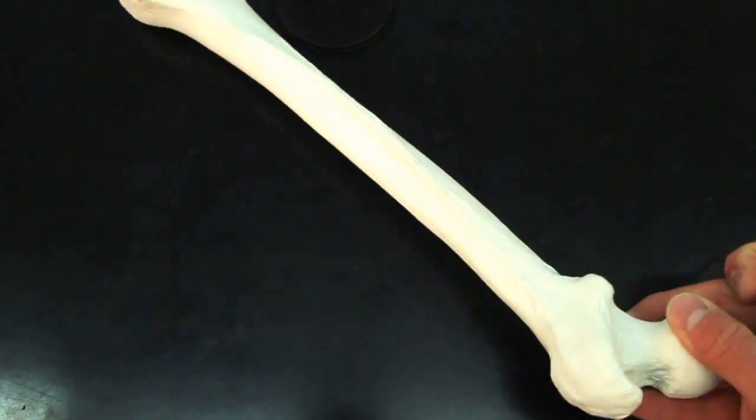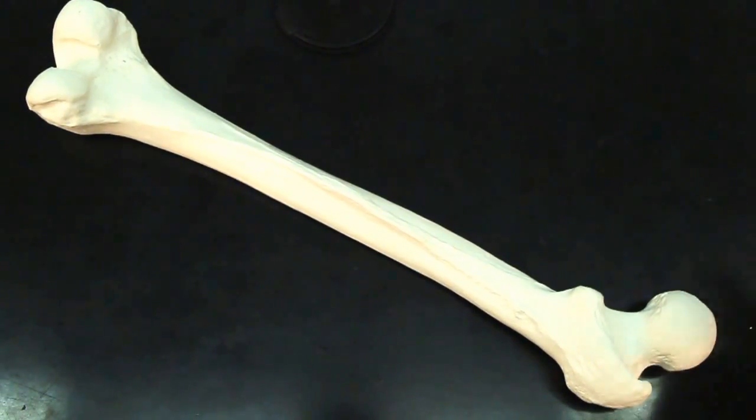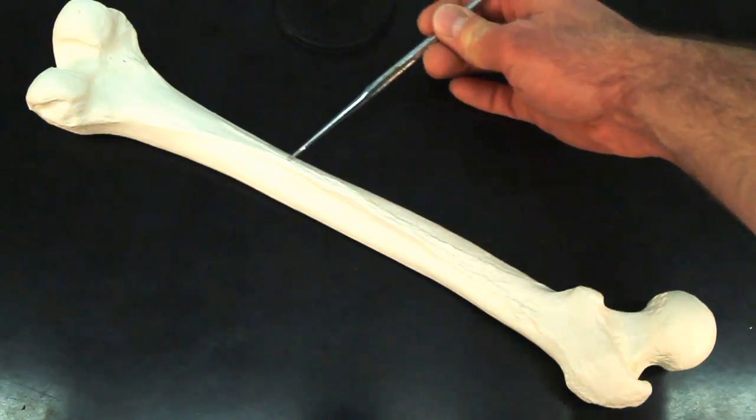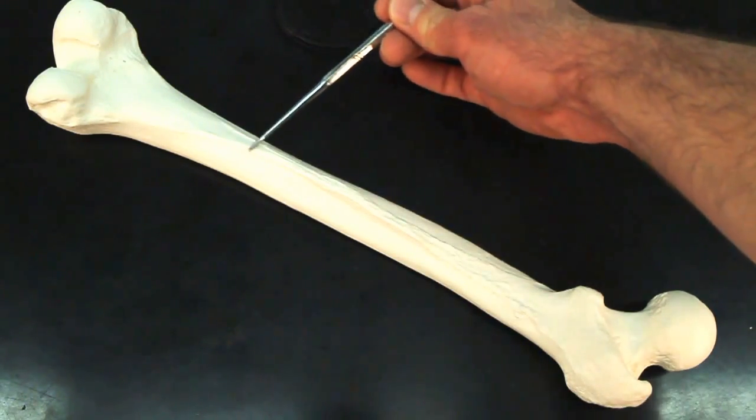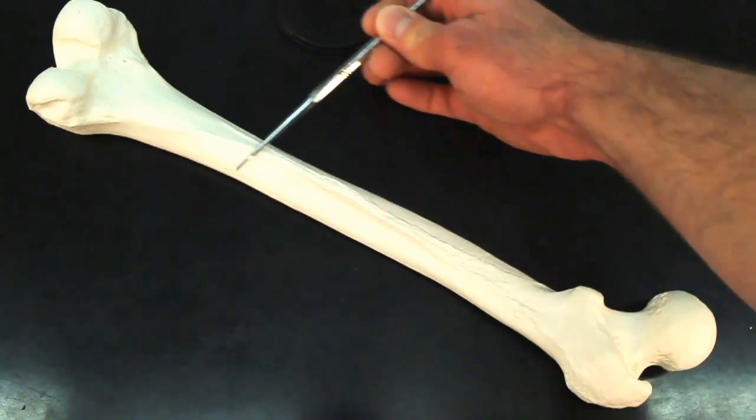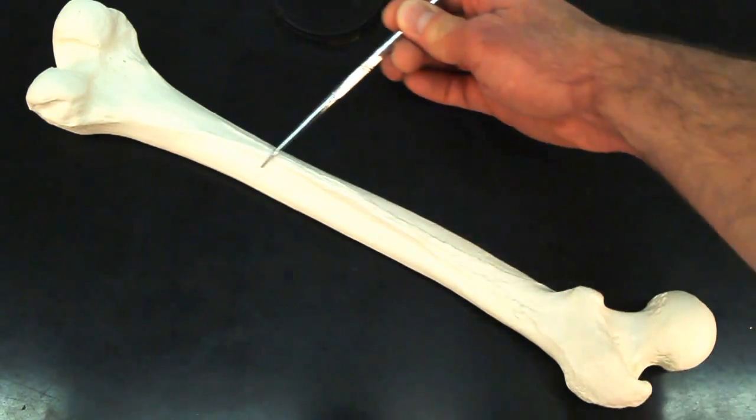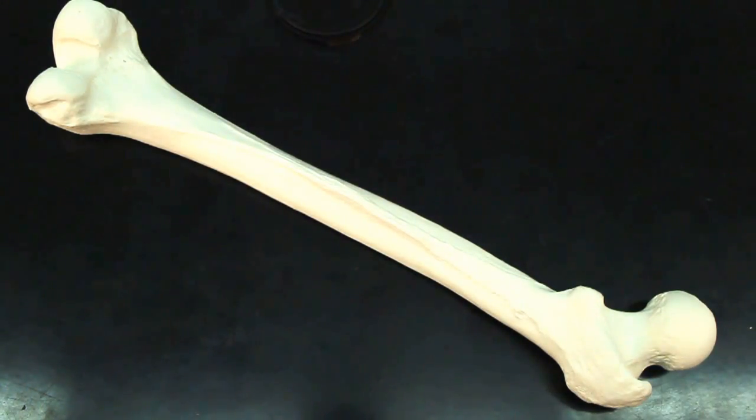Now if we flip over to the posterior side of the bone, you're going to see this ridge of bone running down. That ridge of bone is the linea aspera. It's always on the posterior side.